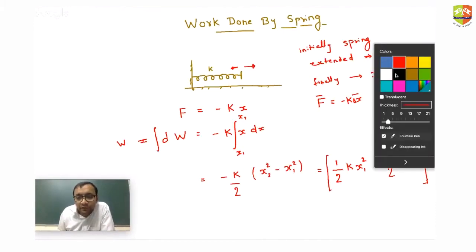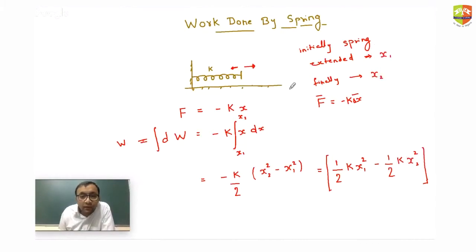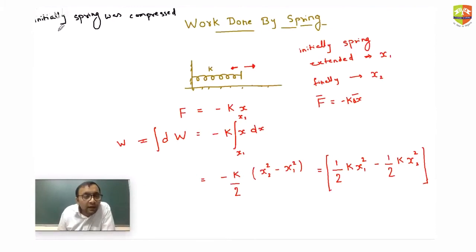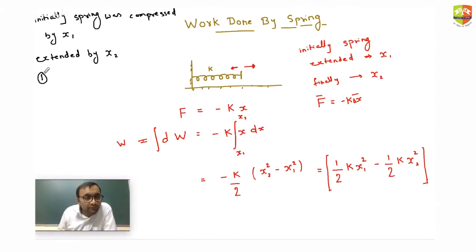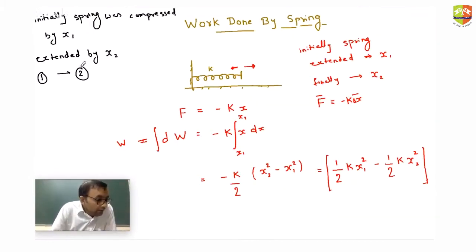Now here is something unique to the spring. Suppose initially the spring was compressed by x1, and then it gets extended to x2. Compared to natural length the spring starts in a compressed state and ends with extension x2. In this process, what is the work done by the spring? Note: compression x1 is not equal to extension x2.